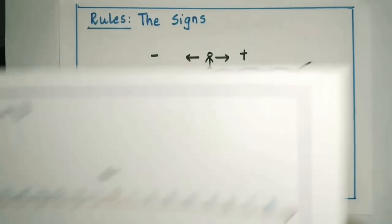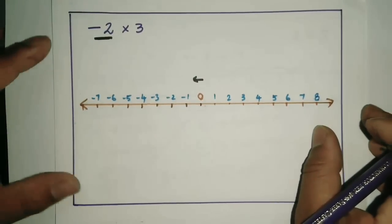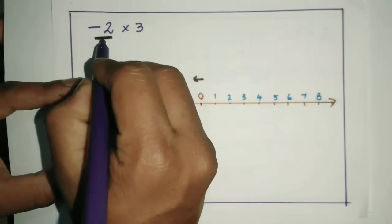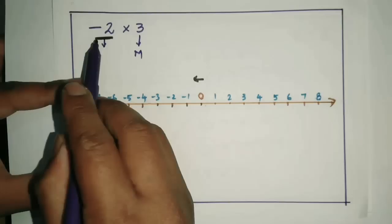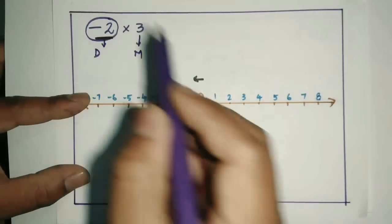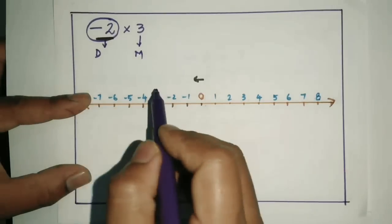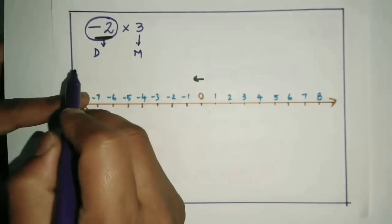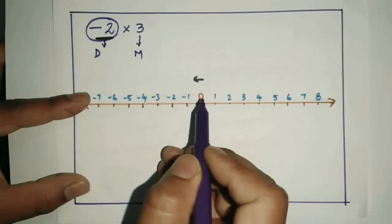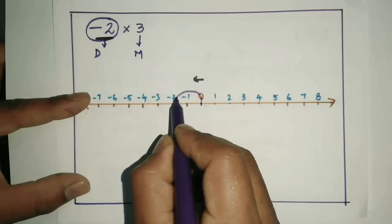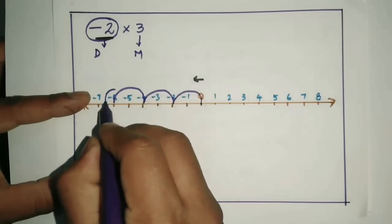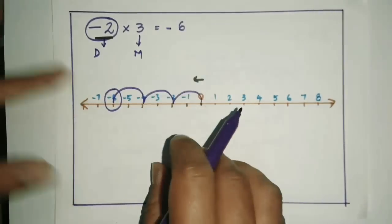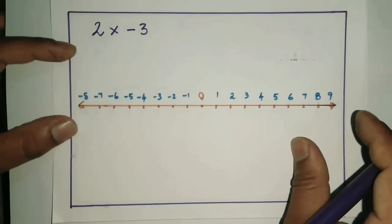Now let us consider minus 2 into 3. The first digit determines direction and the second determines movement. Since the first number is negative, you are facing towards your left. The second number is positive, so you are moving forward. Facing left and moving forward, you move 2 steps forward three times — therefore your answer is minus 6.